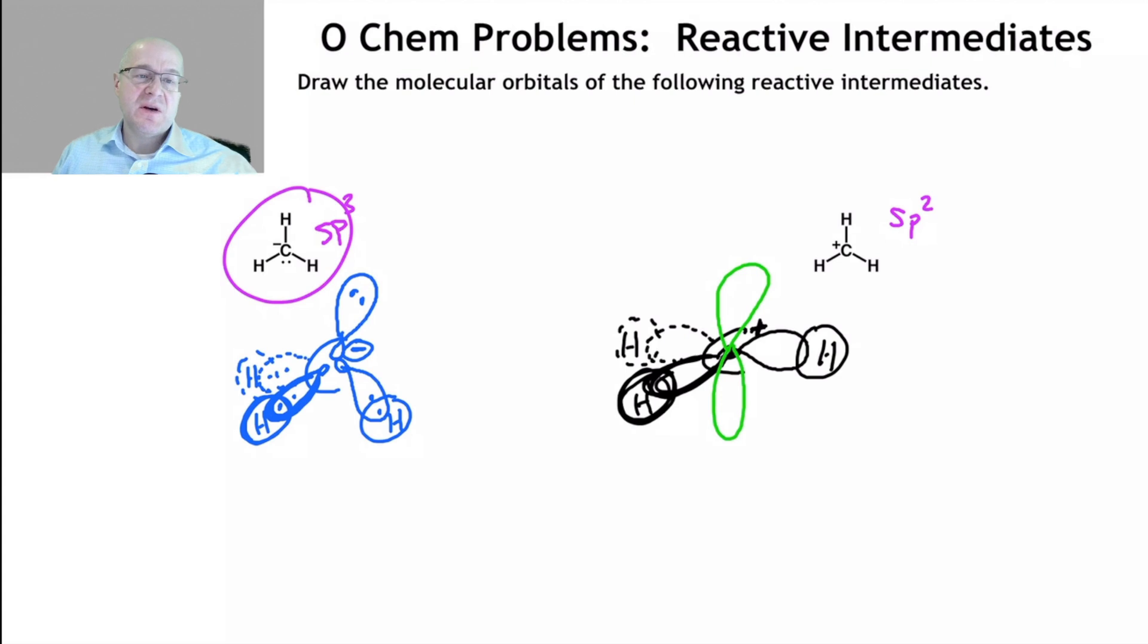So the take-home message here is carbanions are sp3, unless they can resonate - of course they can resonate, they're sp2. They're sp3, they're tetrahedral.